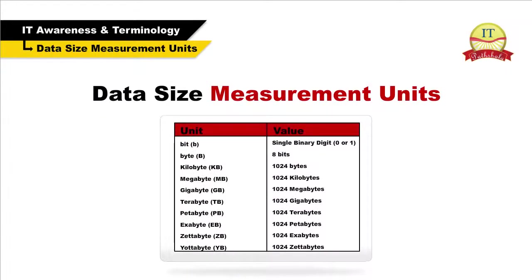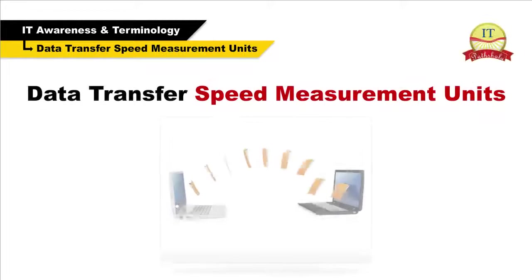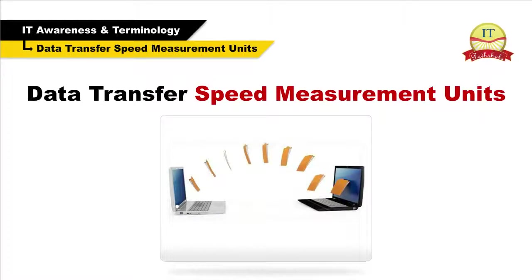The smallest unit of measurement used for measuring data is a bit. A single bit can have a value of either 0 or 1. A byte, or 8 bits, is used as the fundamental unit of measurement for data. Other units of data size measurement and their values are as follows. Data transfer speeds can be measured in bits per second or in bytes per second. A lowercase b means a bit while an uppercase B represents a byte.